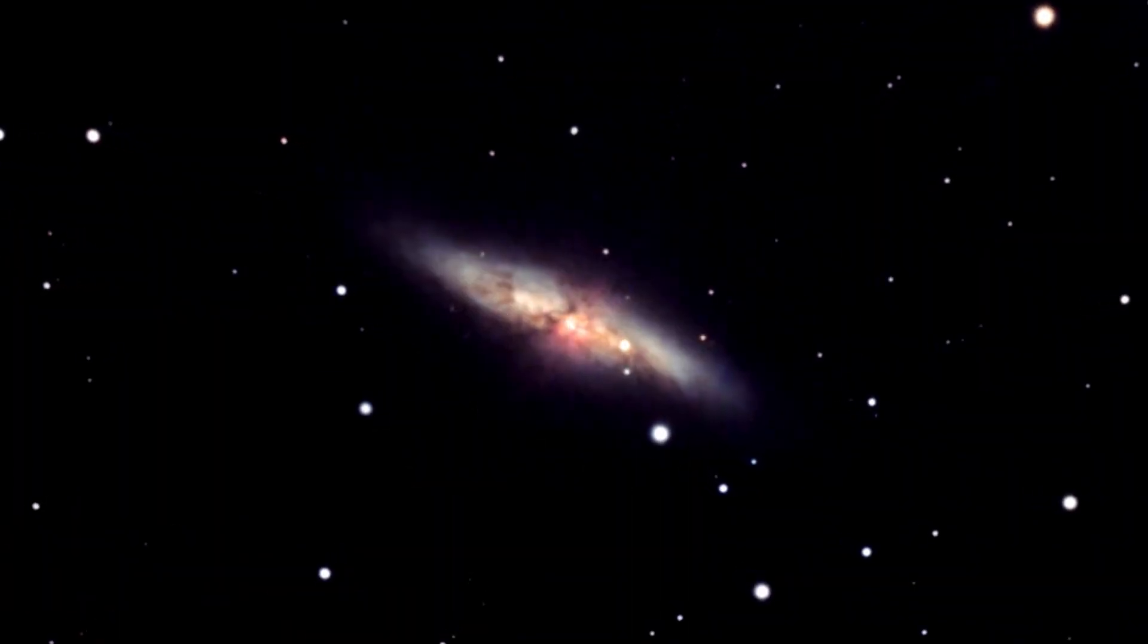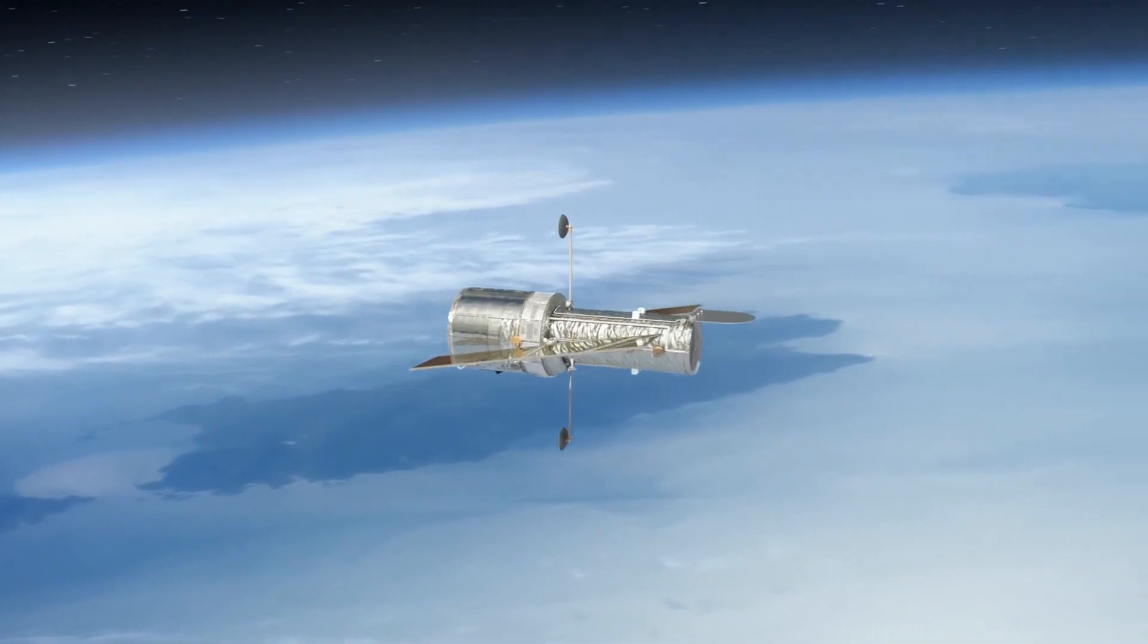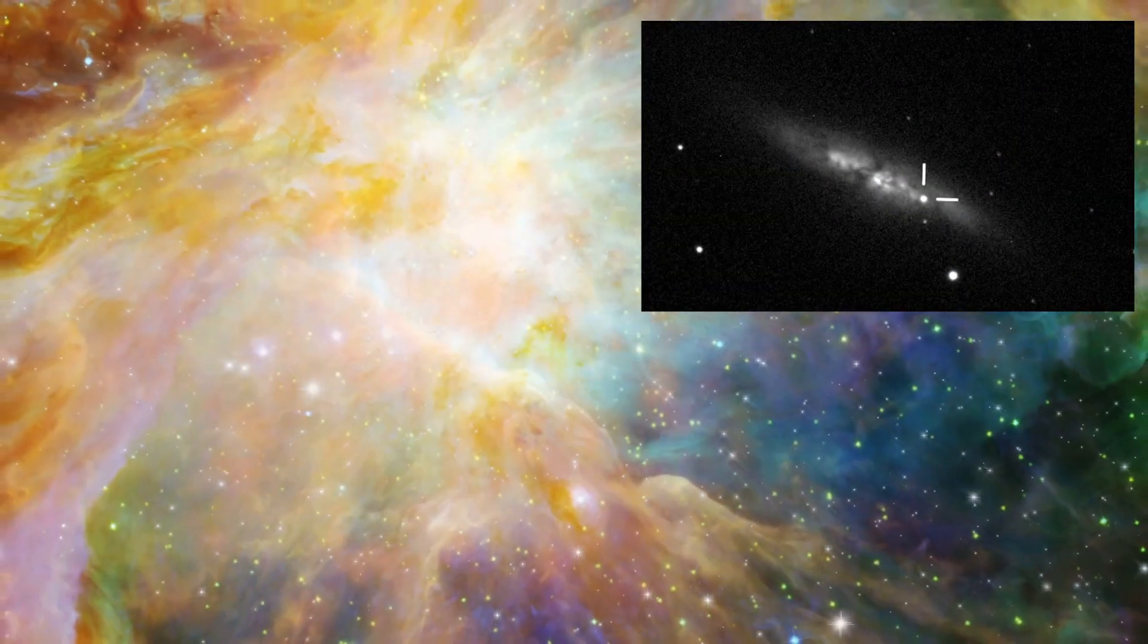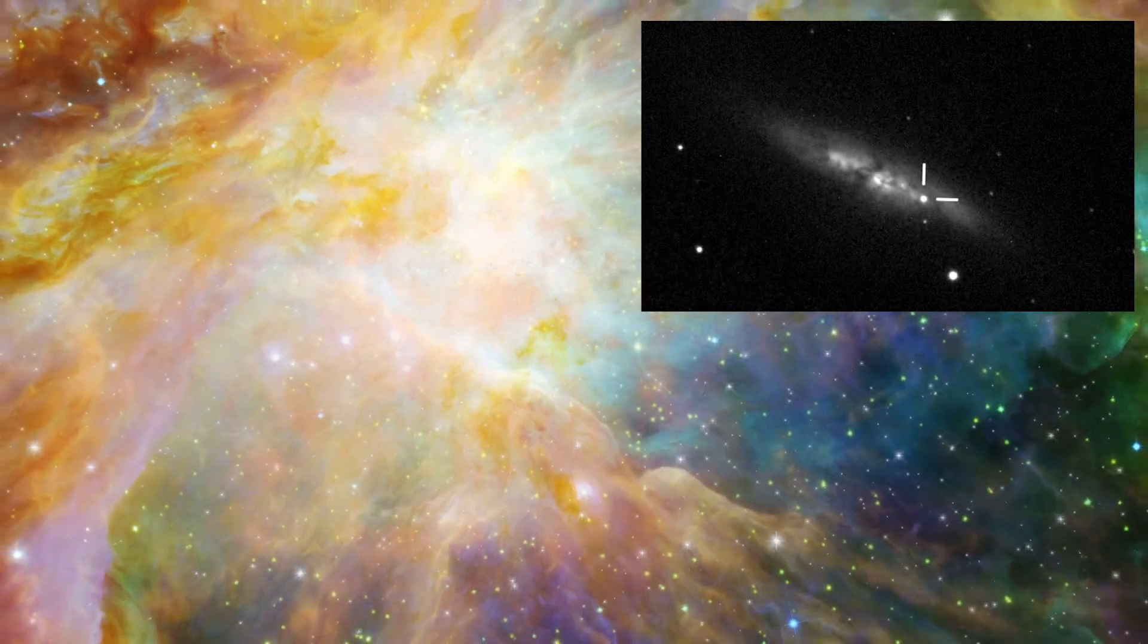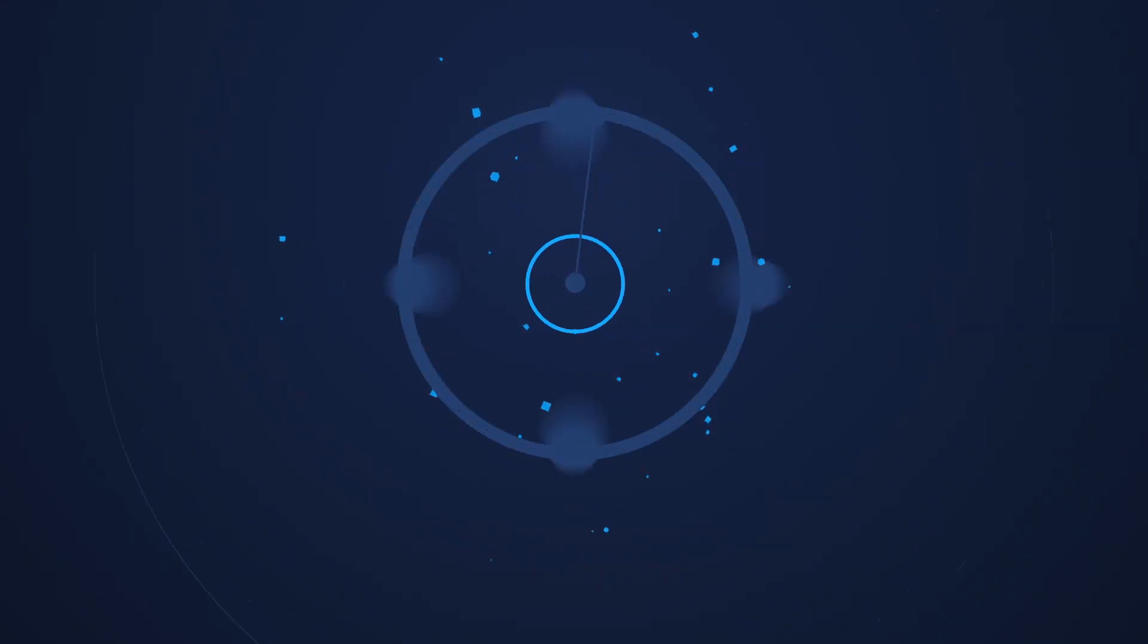This phenomenon is called a light echo, which reflected the supernova's light toward Earth, allowing the Hubble telescope to capture the photographs. This was the closest blast of its kind within four decades, and the M82 galaxy is 11.4 million light-years from Earth. Number 4.